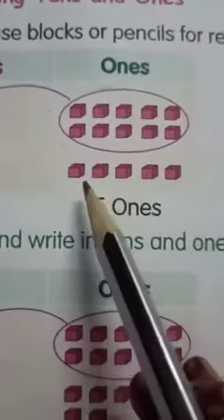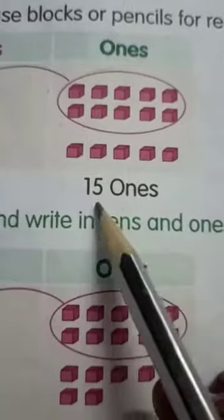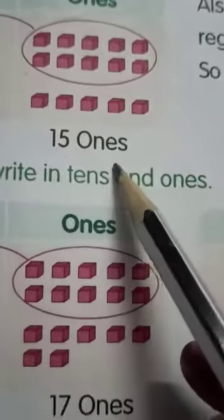Now, we are adding 5 more ones to it. Means, all together we have 15 ones.